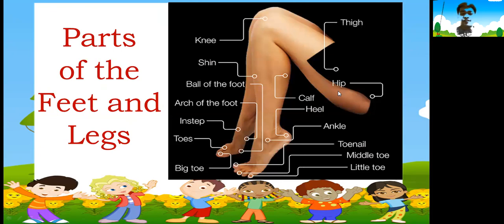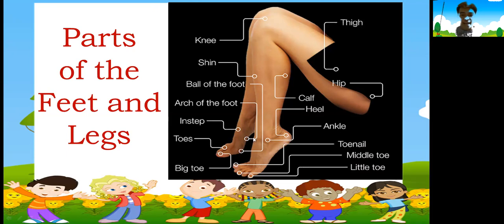Let's have some more about the parts of the feet and legs. We start with the hip at the top, then the thigh, then the knee. The front part here is your shin; the back part is your calf. Then we have the ball of the foot, the arc of the foot, and the instep. Toes: big toe, middle toe, little toe. Then ankle, heel, and calf again. Those are all the parts of our feet and legs.